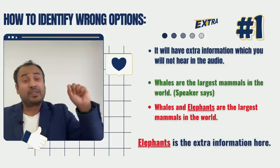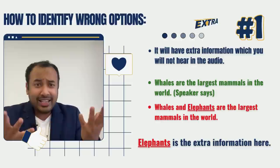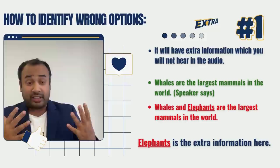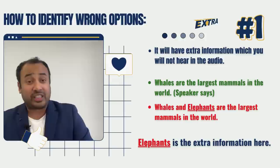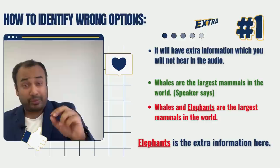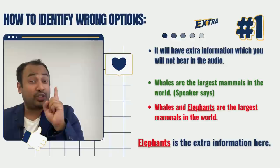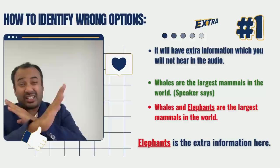If you see an answer that contains extra information you didn't hear, that is a wrong answer. They are trying to trick your brain. Please do not read further — just cross it out immediately. It's a wrong answer because they're adding extra information.